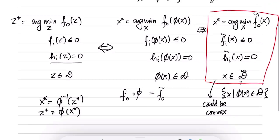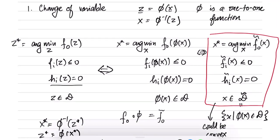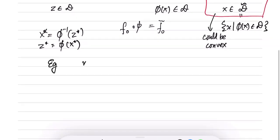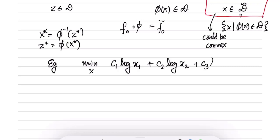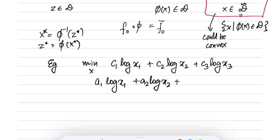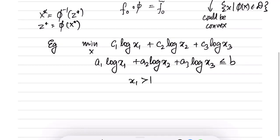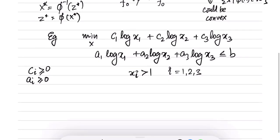Let's consider an example where this kind of transformation renders a non-convex problem into a convex one. Consider: minimize over x, c₁·log(x₁) + c₂·log(x₂) + c₃·log(x₃), subject to a₁·log(x₁) + a₂·log(x₂) + a₃·log(x₃) ≤ b, and xᵢ ≥ 1 for i = 1, 2, 3 (to ensure logs are well defined). It is given that cᵢ > 0 and aᵢ ≥ 0.